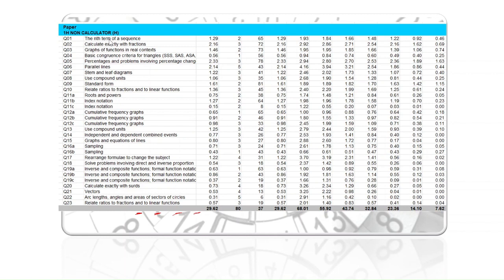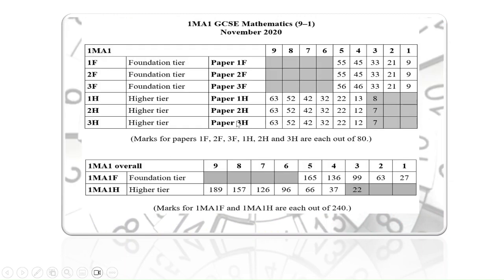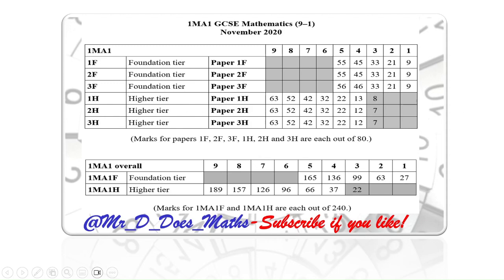That brings us to the end of the paper. There's a skills map which is quite useful if you want to drill down. The average mark for that arc and length question was 0.31 out of 5 marks. The grade boundaries for this paper out of 80: roughly 63 for a 9, 52 for an 8, 42 for a 7, 32 for a 6, 22 for a 5, and 13 for a 4. I hope you found that useful — thank you for your time, and subscribe if you like.